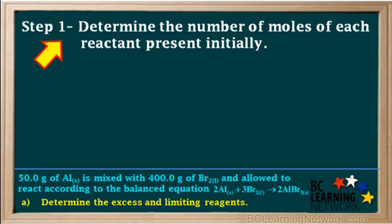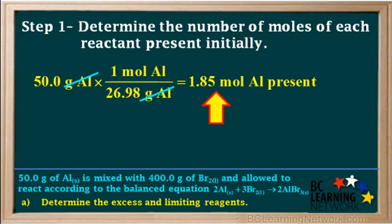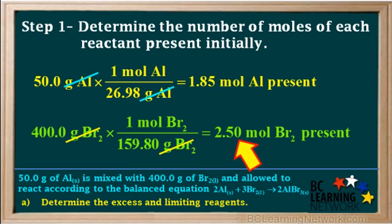We start by finding the number of moles of each reactant present initially. We have 50 grams of aluminum, so we multiply by 1 mole over 26.98 grams, its atomic mass, giving us 1.85 moles of aluminum. We're also told 400 grams of bromine is present, so we multiply by 1 mole over 159.8 grams, the molar mass of diatomic Br2, giving us 2.50 moles of bromine.